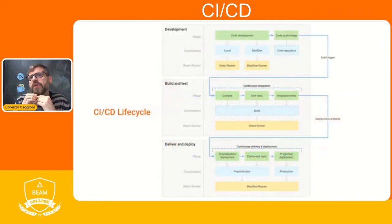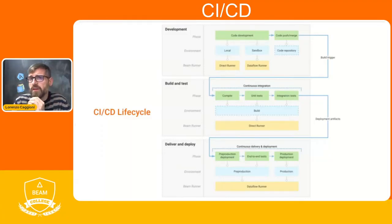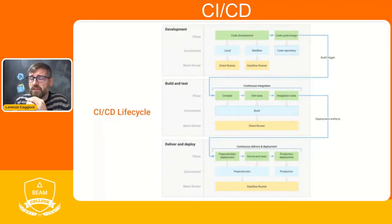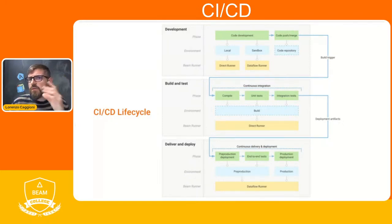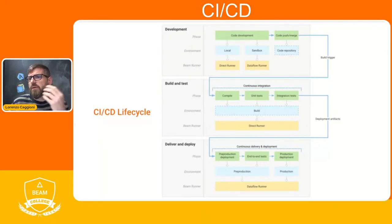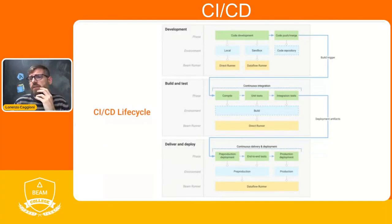Here you can find a typical pipeline example. You start development on your development environment and typically run the pipeline on a direct runner, or sometimes on a sandbox environment to test it with the production runner such as the Dataflow runner. Once your code is working and ready to go, you submit it to your code repository. The push will trigger the builder and it will run unit tests for the pipeline. Assuming all tests pass, this will be moved to pre-production and later to production.